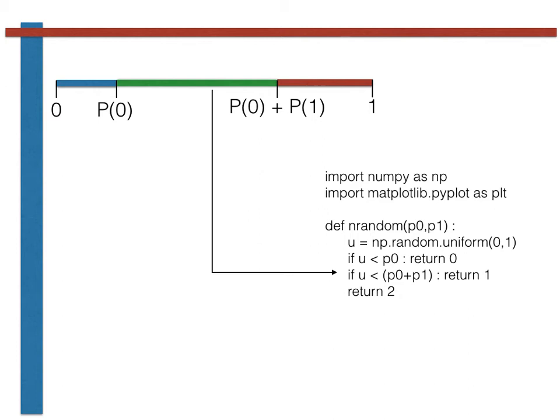Lastly, if neither of these two conditions are satisfied, then we know that the value of u must be within the red line segment, so our function returns a 2.